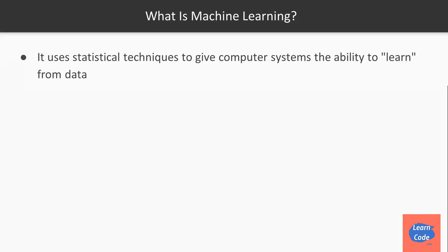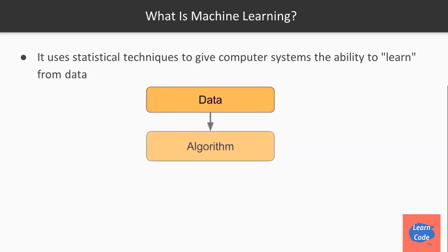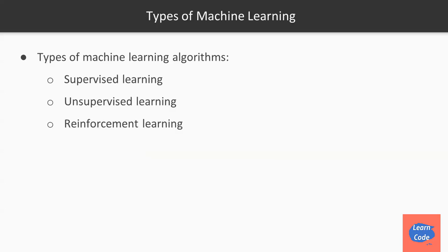In simple terms, machine learning uses statistical techniques to give computer systems the ability to learn from data. The data comes in, goes into the algorithm, and the model is generated from this learned algorithm. Now let's see some of the types of machine learning algorithms: supervised learning, unsupervised learning, and reinforcement learning.